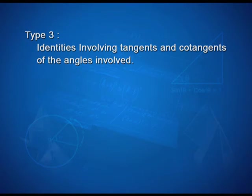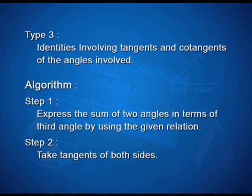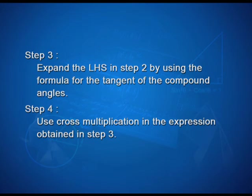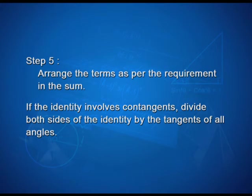Now taking Type 3 identities — identities involving tangents and cotangents of the angles. The algorithm: Step 1, express the sum of two angles in terms of the third angle using the given relation. Step 2, take tangents of both sides. Step 3, expand the LHS using the formula for tangents of compound angles. Step 4, use cross multiplication in the expression obtained. Step 5, arrange the terms as required. If the identity involves cotangents, divide both sides by the tangents of all angles.